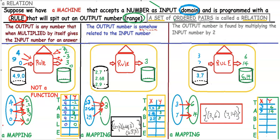When 9 goes in, 3 and negative 3 come out because those can be multiplied by themselves to give 9. And 0 goes in, 0 comes out. So the first one is not a function.